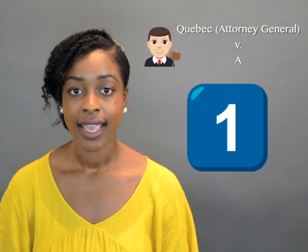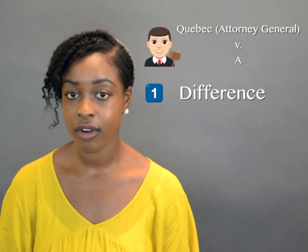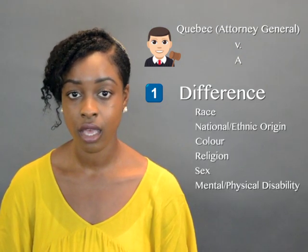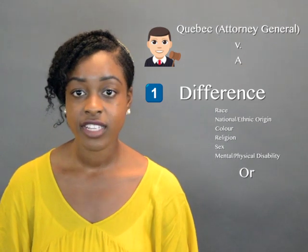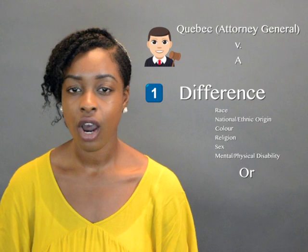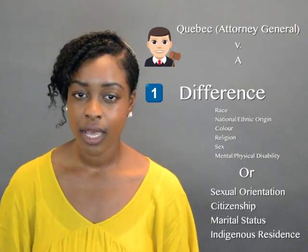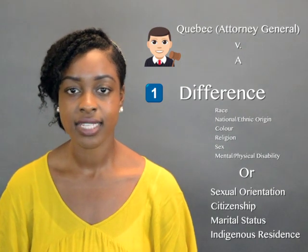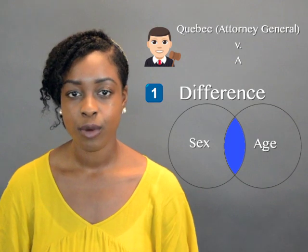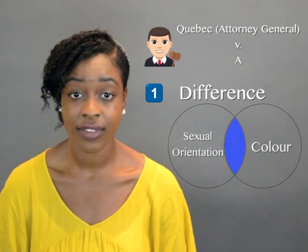First, if it sets out a difference that disadvantages a group based on a number of grounds including race, religion, and physical disability — or the difference is based on some other personal characteristic that is hard to change, such as sexual orientation, citizenship, marital status, and indigenous residence. Discrimination can also be a result of different treatment based on the intersection of any of these grounds.